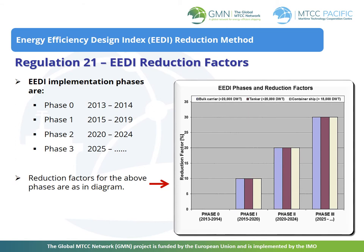Regulation 21 specifies the method for calculating the required EEDI and all relevant details. The required EEDI is the regulatory limit for EEDI and its calculation involves the use of reference lines and reduction factors. Please note that Regulation 20 deals with the attained EEDI and specifies the need for its calculation and verification. Attained EEDI is the actual EEDI of a ship that is calculated using the EEDI formulae.